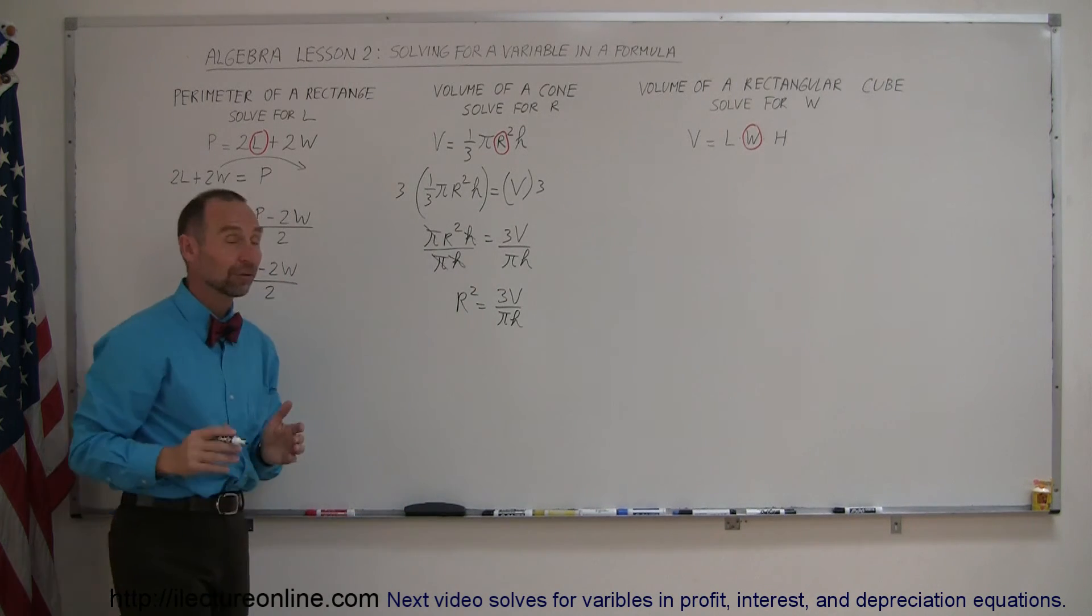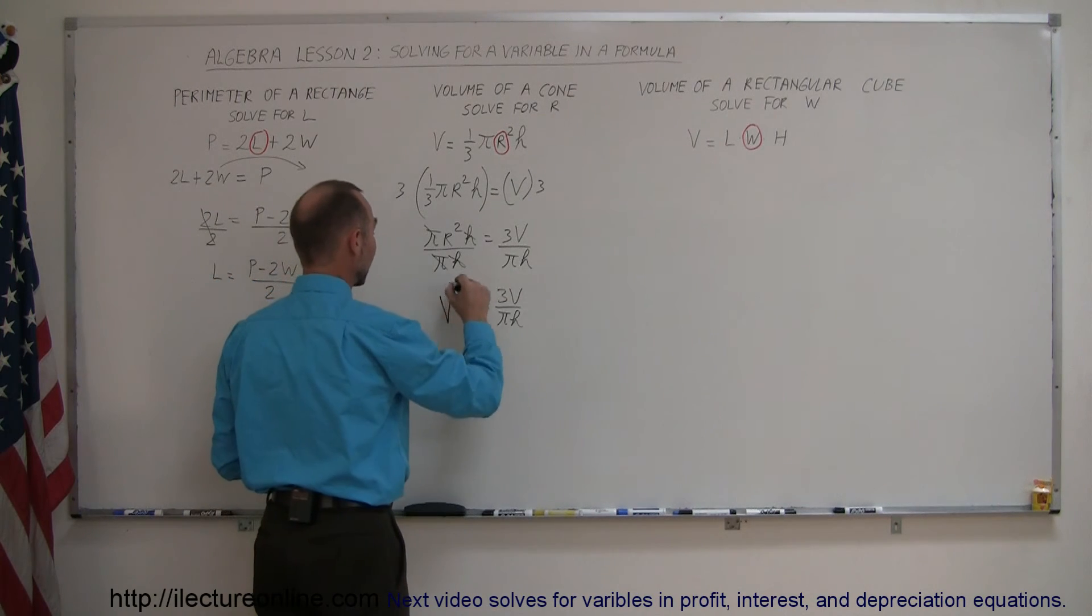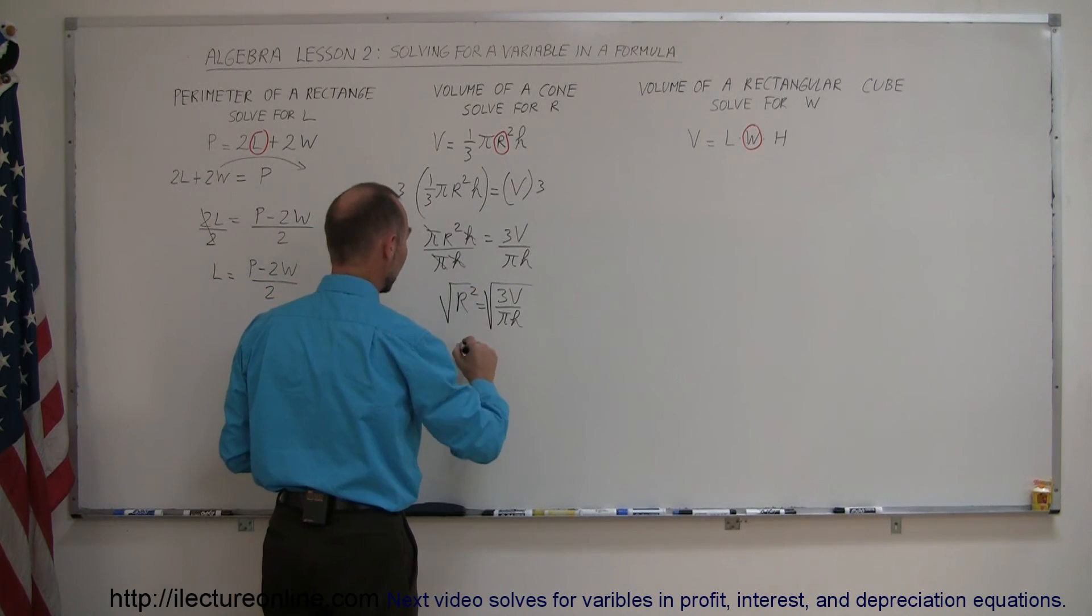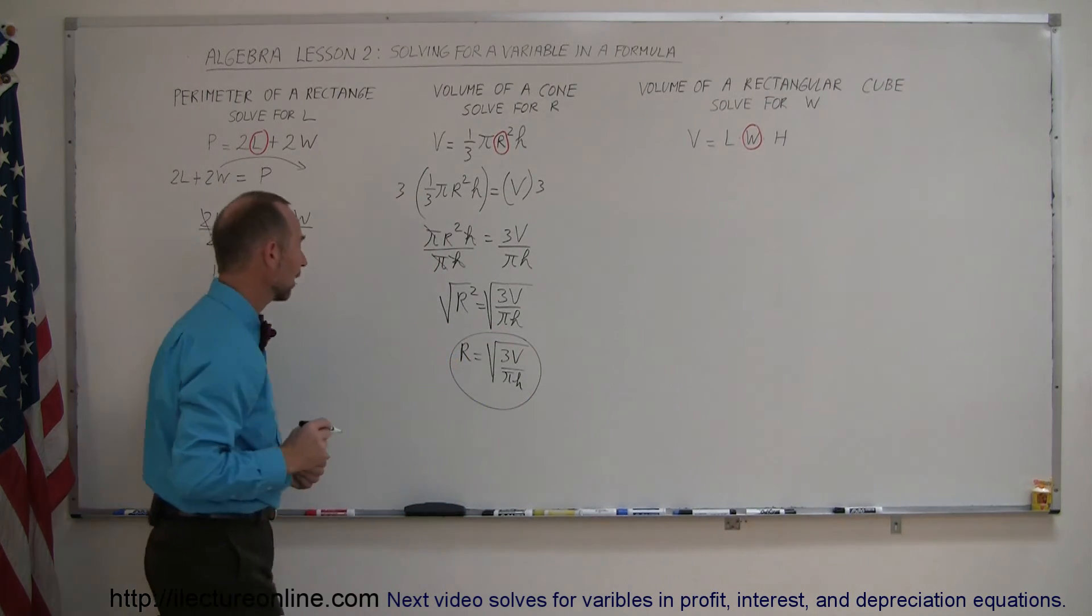Now the last step, we're not looking for r squared, we're looking for r, so take the square root of both sides. Square root of the left side equals the square root of the right side, so r equals the square root of 3 times the volume over pi times h. And there's the answer of that example.